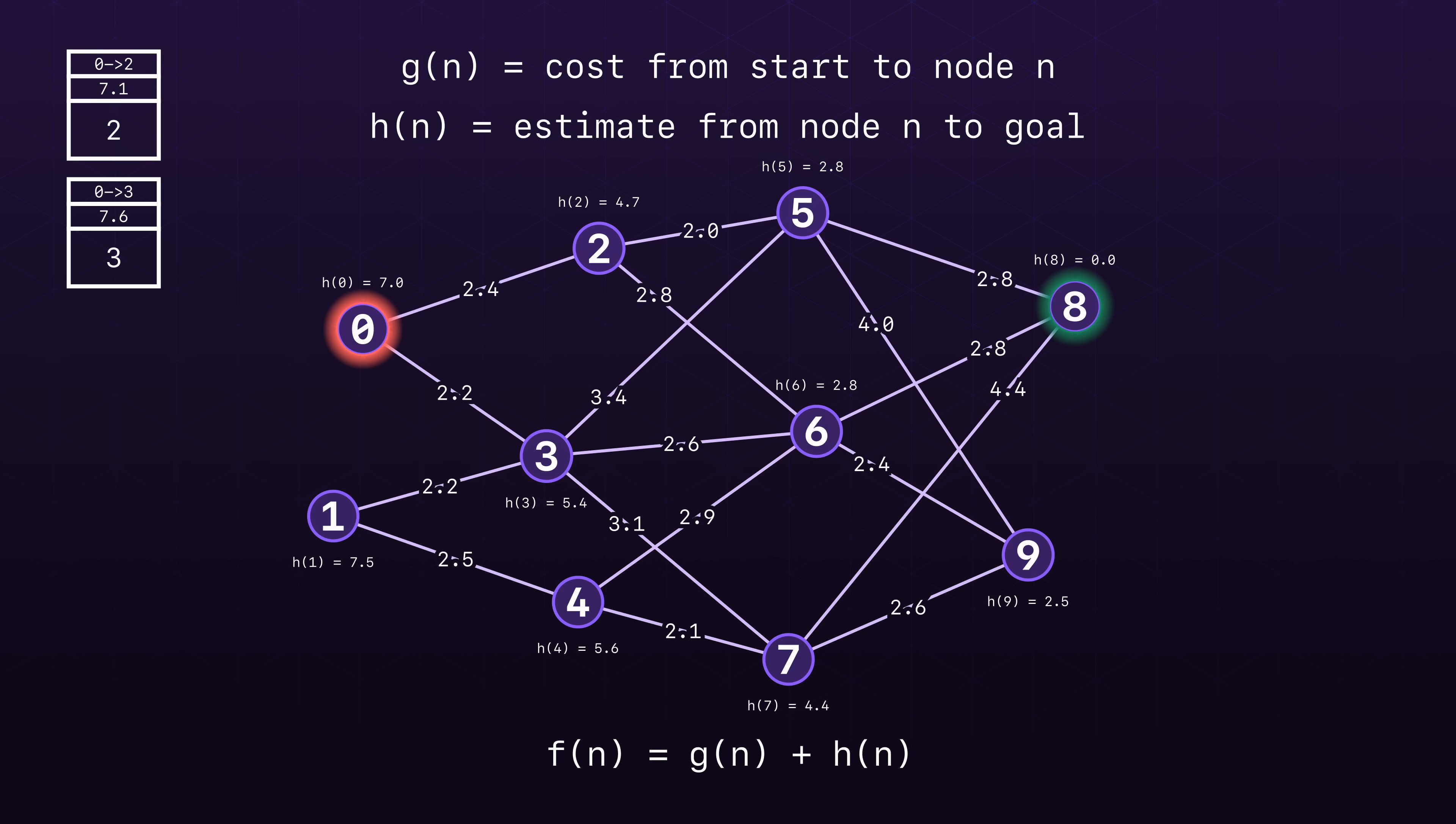In A star search, the total weight considers the 2.4 distance traveled to reach it, resulting in 4.7 plus 2.4 is equal to 7.1. Similarly, node 3 totals 2.2 plus 5.4 is equal to 7.6.